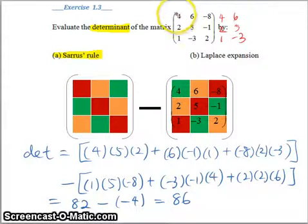So you see 4, 5, 2 which is this; 6, negative 1, 1 which is this; followed by negative 8, 2, negative 3 which is this. And for the second part you can take a diagonal from bottom left up: so you have 1, 5, negative 8 which is here; negative 3, negative 1, 4 which is here; 2, 2, 6 which is here.